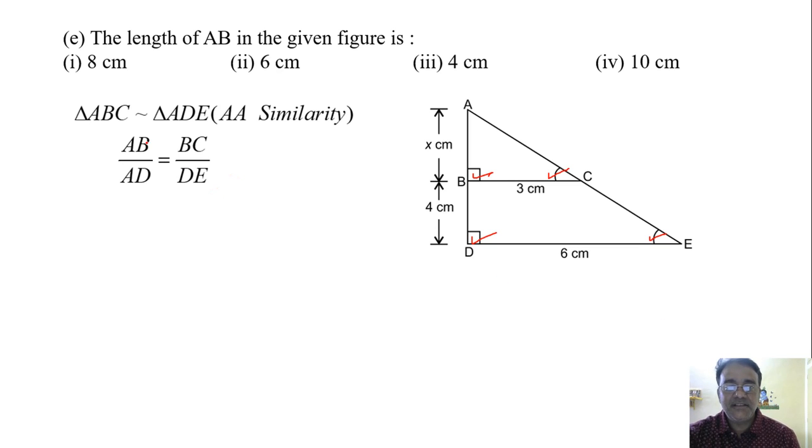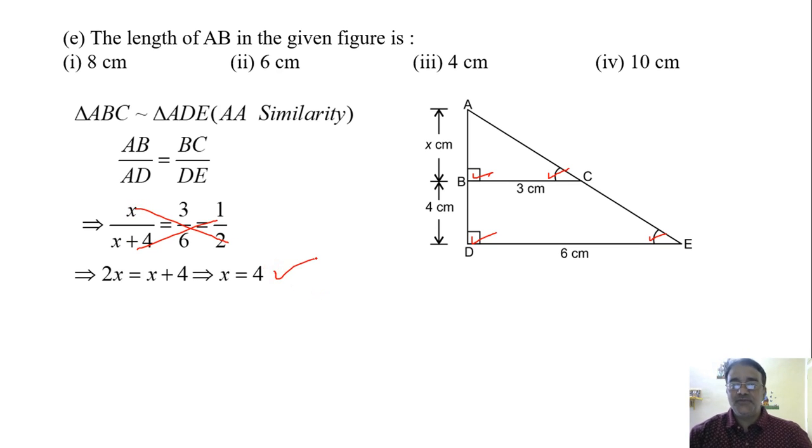So AB is x and AD is x plus 4. BC is 3 and this is 6. That is 1 by 2. Now if we cross multiply what you will get, 2x is equal to x plus 4 and we will get x is equal to 4. So what is the correct option? Third option. Third option.